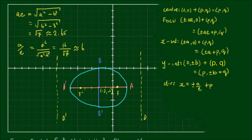In summary, given a semi-major and semi-minor axis, an ellipse offset from the origin is the same shape as one centered at the origin, except every feature has been shifted by the value of the center point coordinates. The center point is shifted to coordinate PQ, as are the focal points, the x-intercepts, the y-intercepts, and the directrices are offset by the value P.